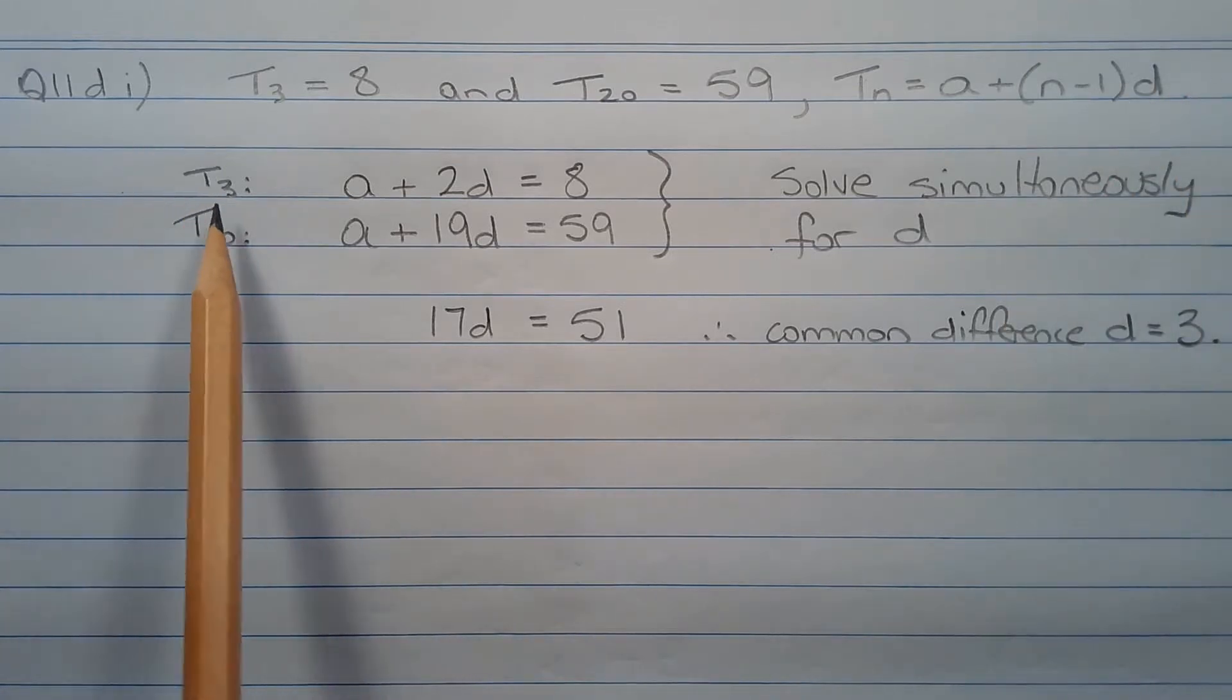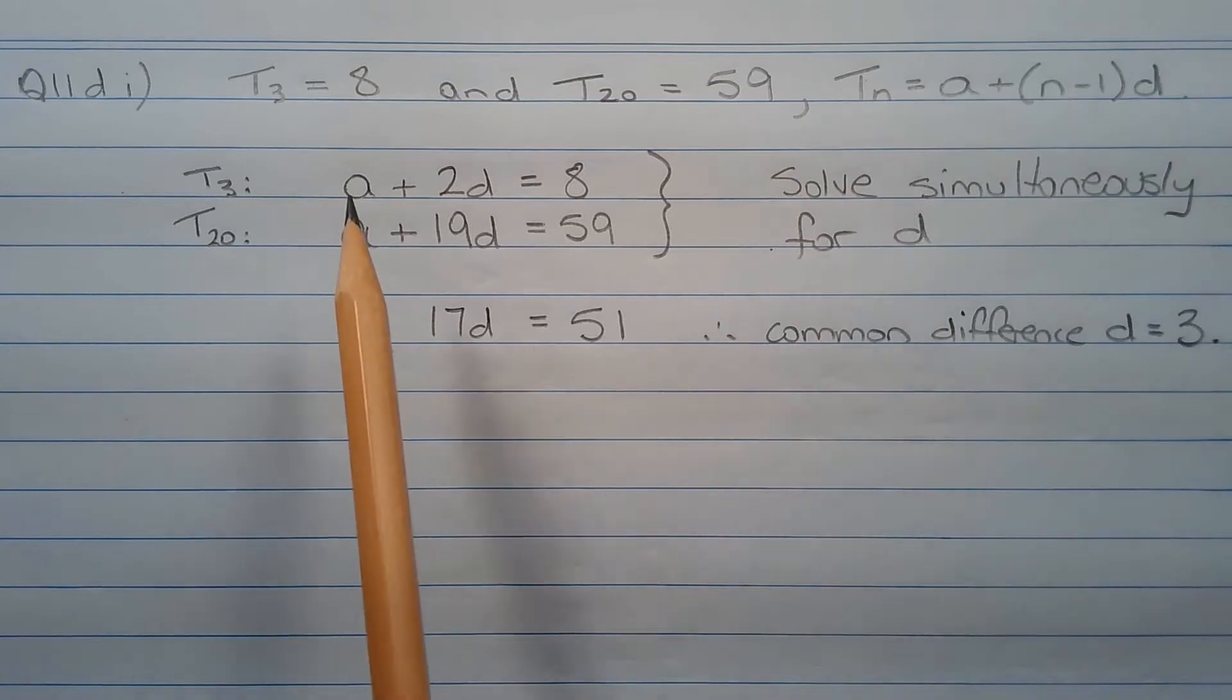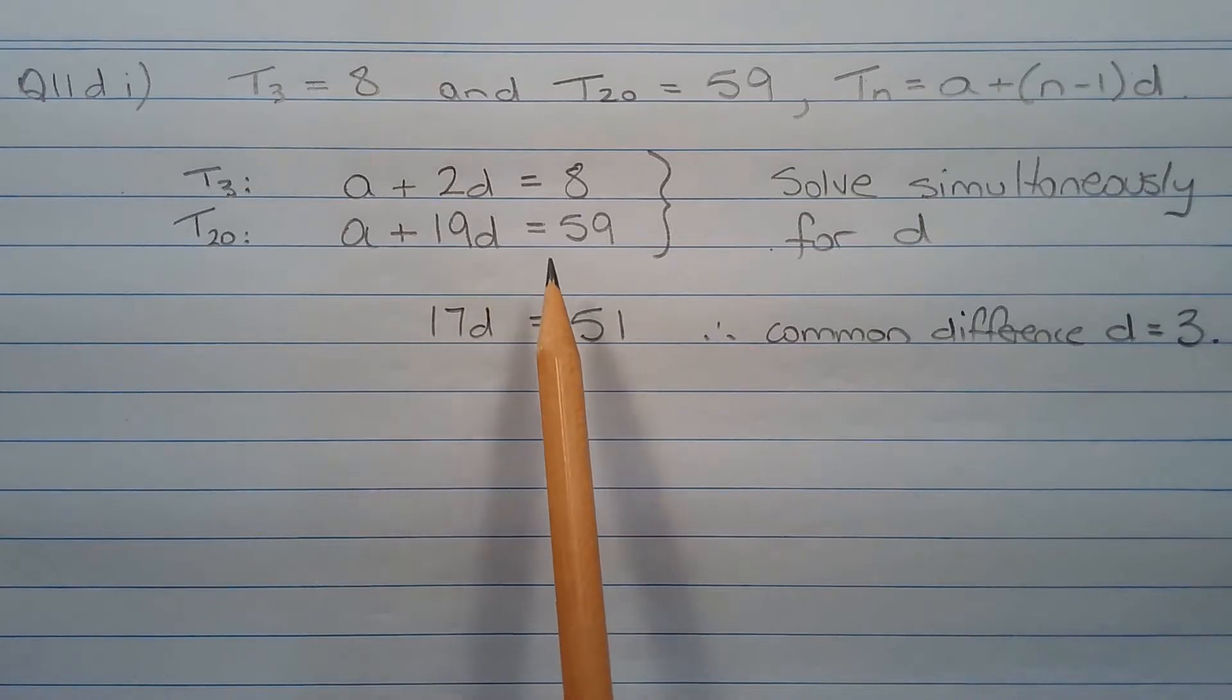Now from T3 and applying this formula, a plus 2d equals 8. And from T20, a plus 19d equals 59.